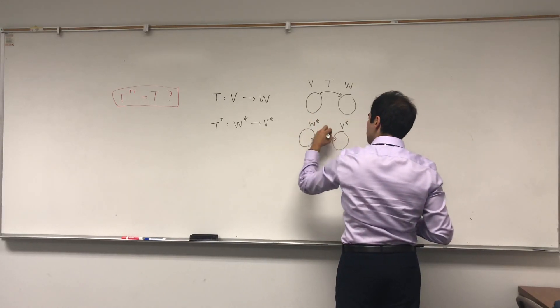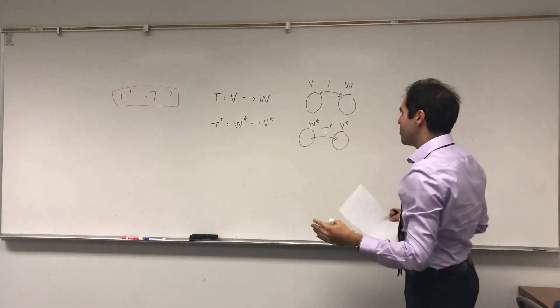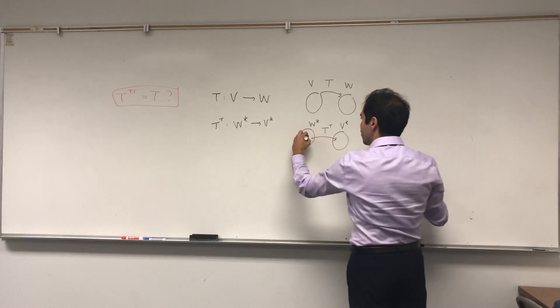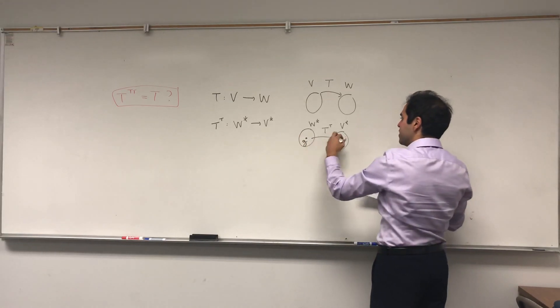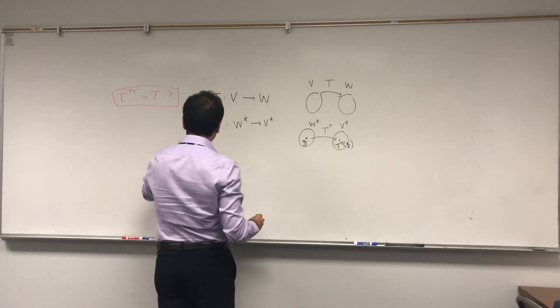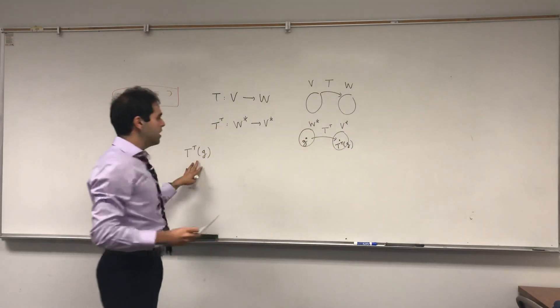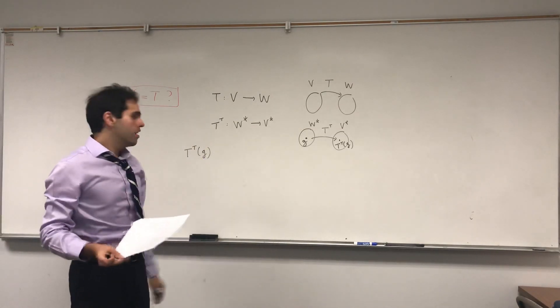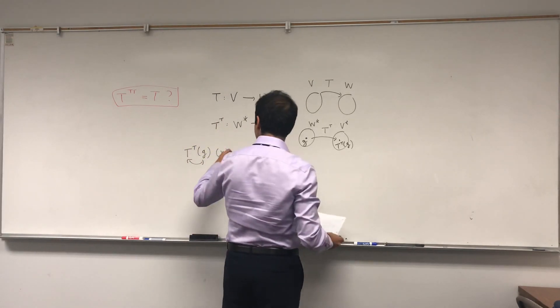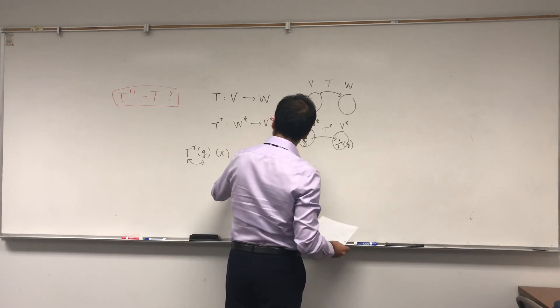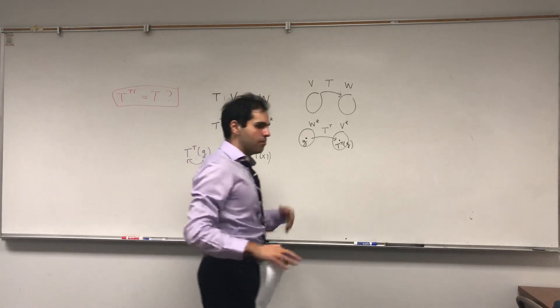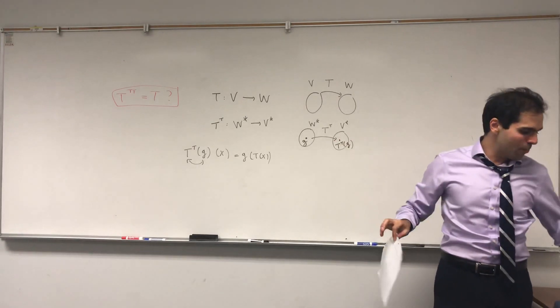And what does T transpose do? Very important. T transpose takes a function as its input and spits out another function. So it takes G as its input and spits out T transpose G. And T transpose G is a function from V to the field, where you just flip G and T. That's G of T of X. I have done details on this in another video. But this is not the point of today.